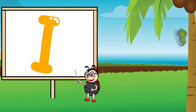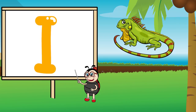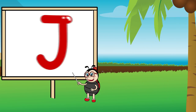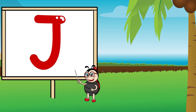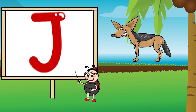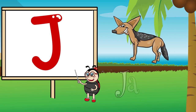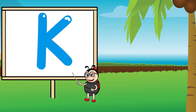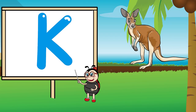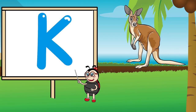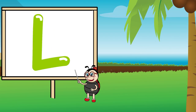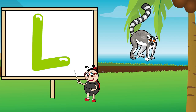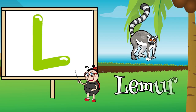I is for iguana, uh, iguana. J is for jackal, ch, jackal. K is for kangaroo, k, kangaroo. L is for lemur, l, lemur.